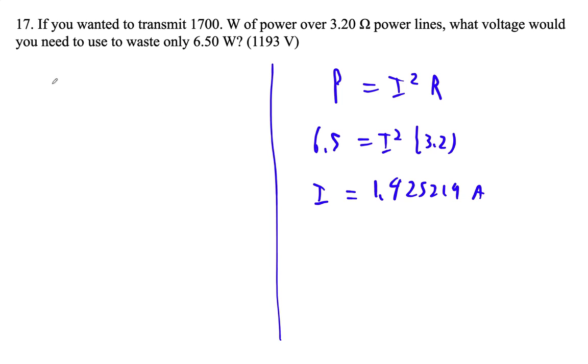So now we can figure it out here. We're going to find the voltage we need. We want to transmit 1,700 watts. And that's P equals IV. So 1,700 equals 1.425219 times that voltage.